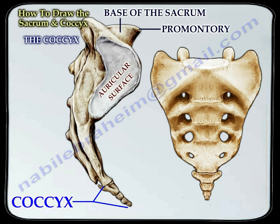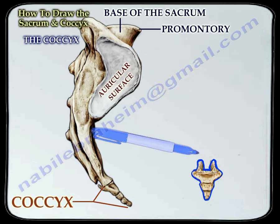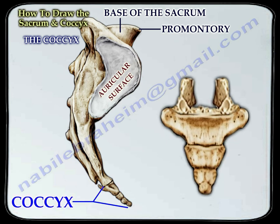The coccyx is a triangular bone that lies at the lower end of the sacrum. It is also called the tail bone. The coccyx is composed of two to four separate or fused vertebrae. It provides important attachments to the tendons, ligaments, and muscles. The coccyx is a shock absorber, and excessive movement is abnormal. Coccyx pain is called coccydynia.